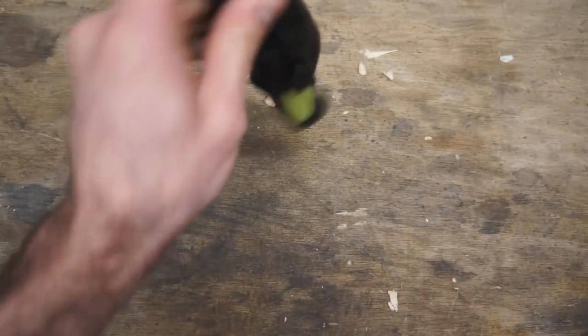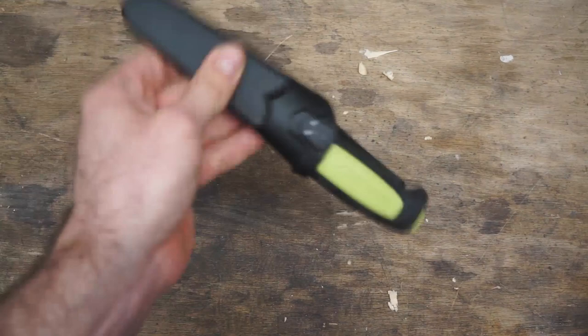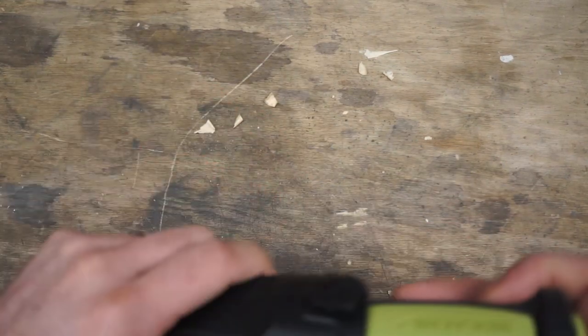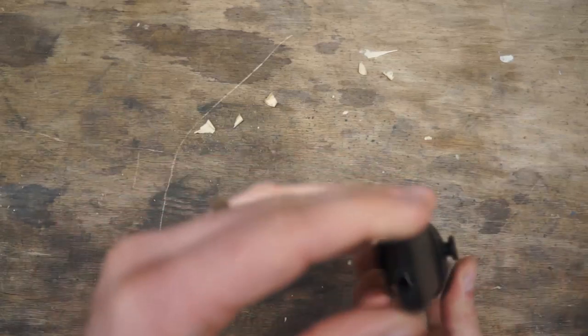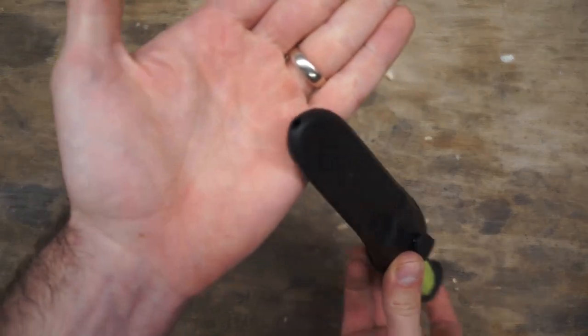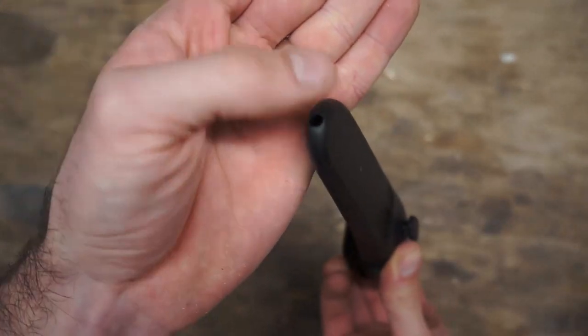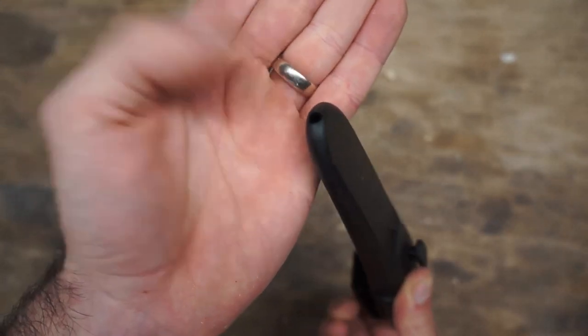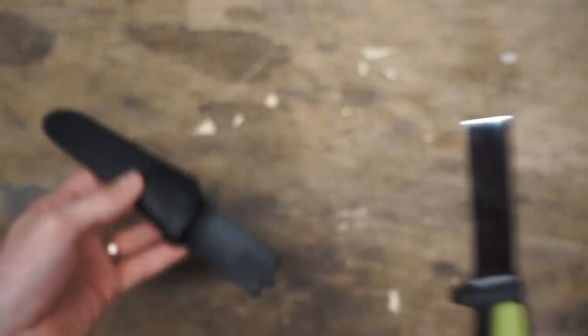But as far as the retention of the sheath, it does hold in there very well. I'm loosely shaking it here. It's not coming out. But two fingers, it pops right out without an issue. And the good thing is, it does have the drain hole at the bottom. Again, if I can get this to focus, you can see if you were using this outdoors in a wet environment, it's not going to hold any moisture in there. It is going to drain out, so it's not going to corrode the knife.